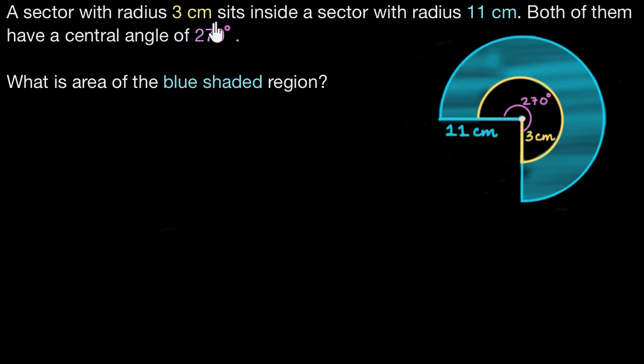A sector with radius 3 cm sits inside a sector with radius 11 cm. Both of them have a central angle of 270 degrees. What is the area of the blue shaded region?